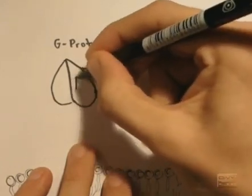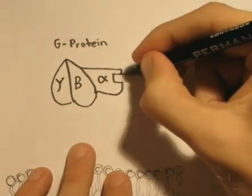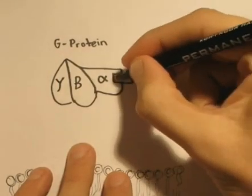This is a G-protein. It doesn't actually physically look like this. It is trimeric because it consists of three subunits: alpha, beta, and gamma. The alpha subunit plays a key role in activating the effector protein in the cell membrane.